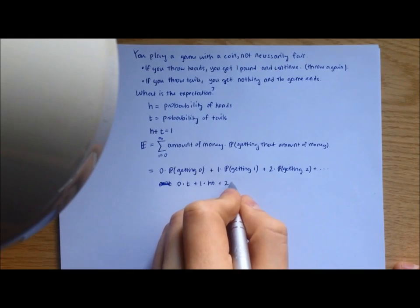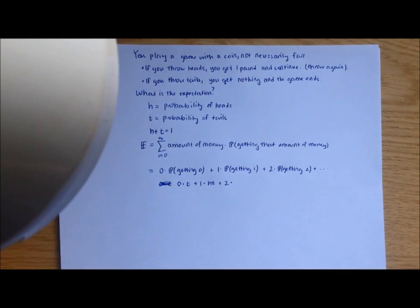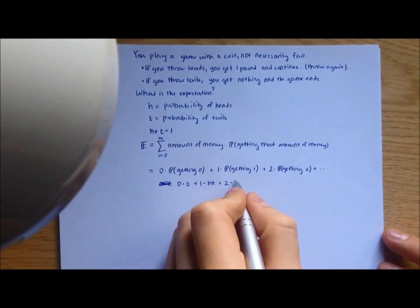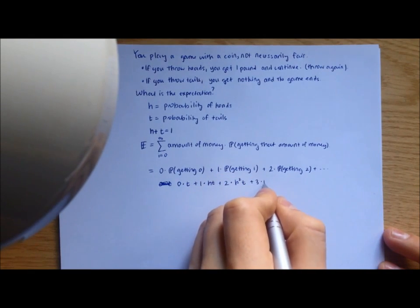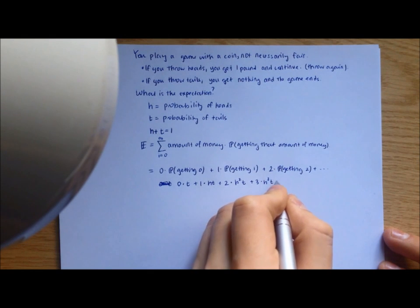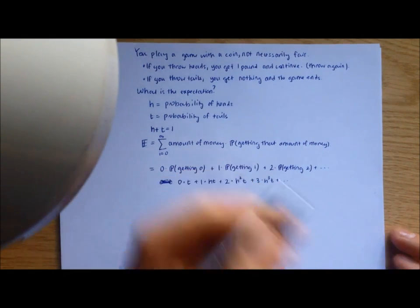Then what's the probability of getting two? Well, you have to throw two heads and then a tail, so it's going to be h squared times t. If we continue this on one more term, we'll have three times h cubed t, and this is a sum to infinity, so this continues forever.